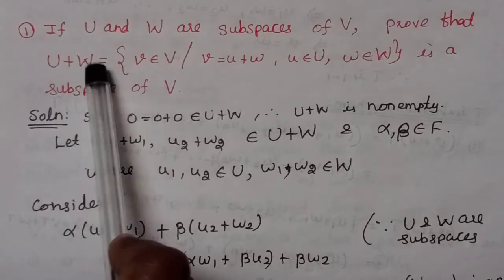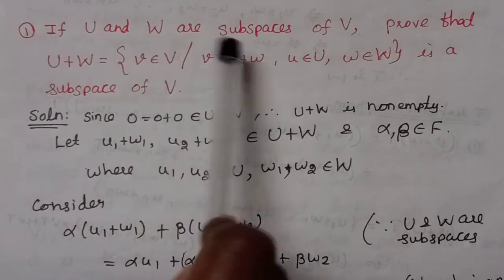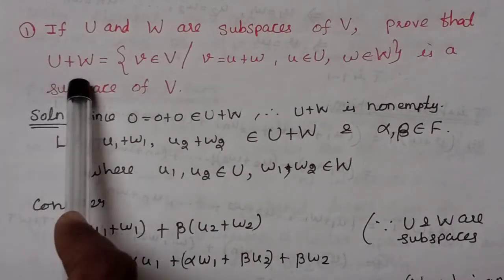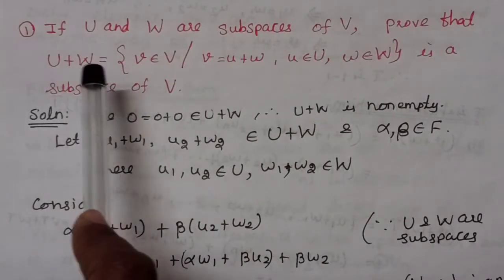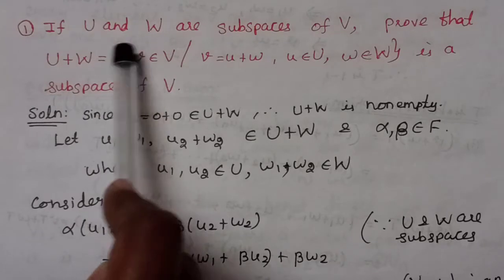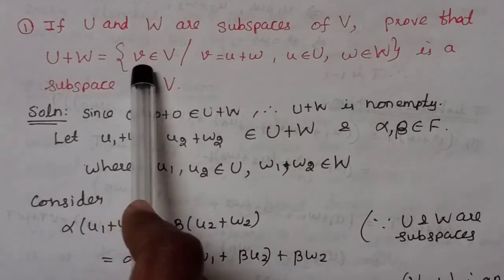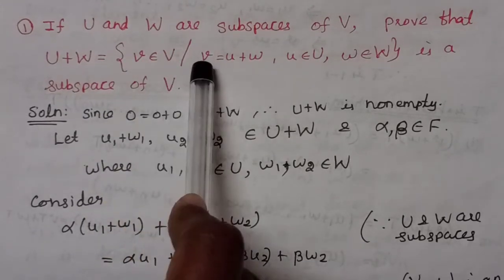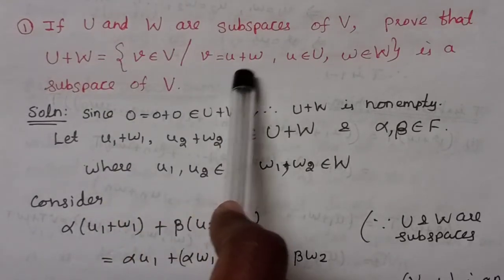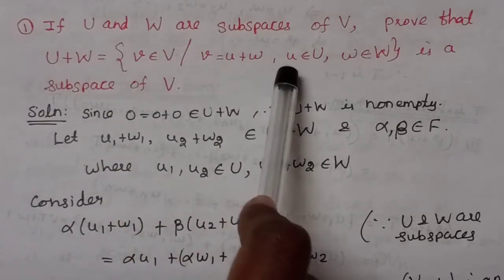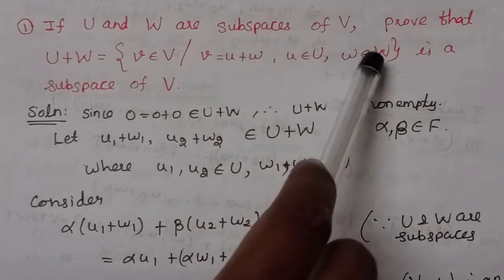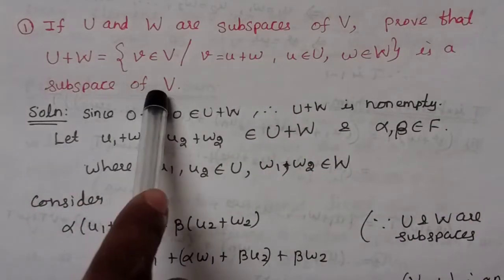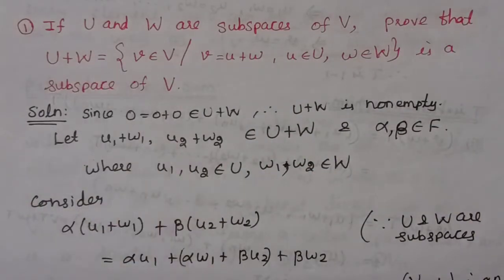If U and W are subspaces of V, prove that U plus W equals the set of all v belonging to V such that v equals u plus w, where u belongs to U and w belongs to W, is a subspace of V.